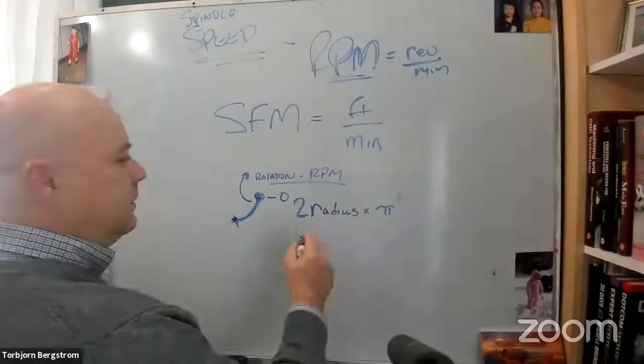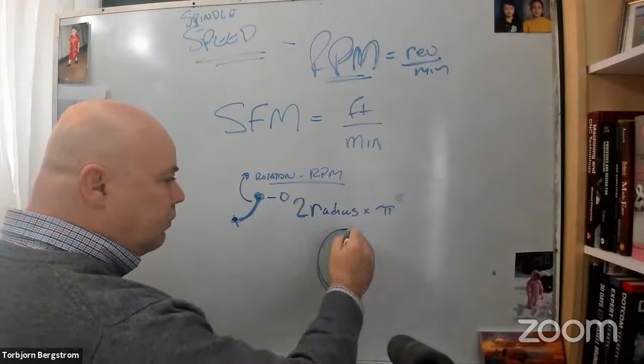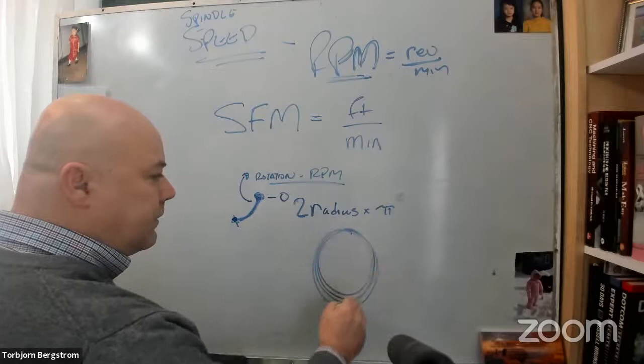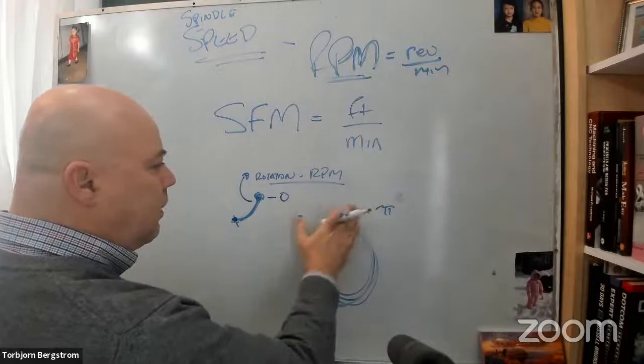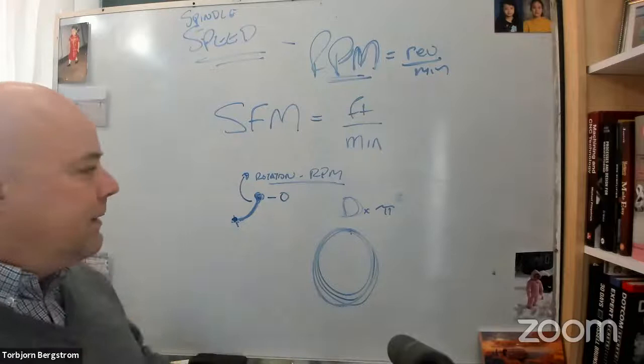So the circumference is the distance per revolution, right? Each revolution, we go one circumference around the circle. So instead of 2 r, I like to say diameter. Because when we talk about end mills, we talk about the diameter of the end mill. When we talk about turned parts, we talk about the diameter of the turned part. So instead of 2 r, is it okay if I say d?